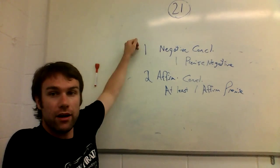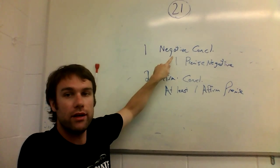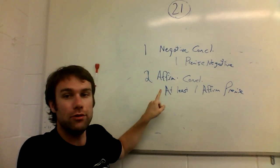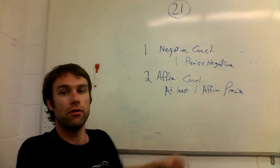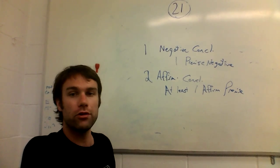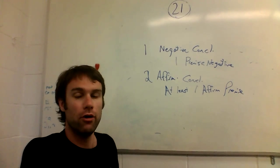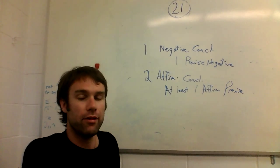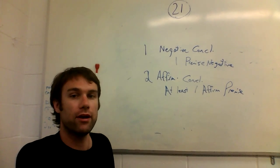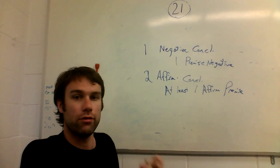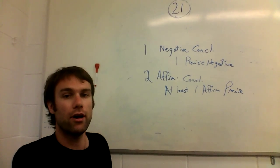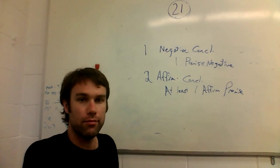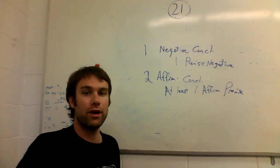So as a summary: if you have a negative conclusion, you need exactly one negative premise. If you have an affirmative conclusion, you need at least one affirmative premise in order to get a valid argument. If you only remember these two rules from all the arguments you encounter from now on, you'll at least avoid these kinds of mistakes and be clearer and better at reasoning.